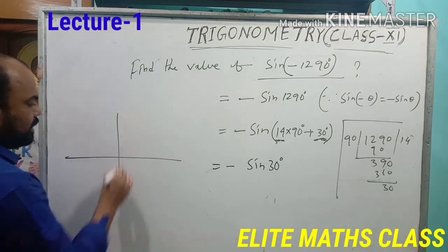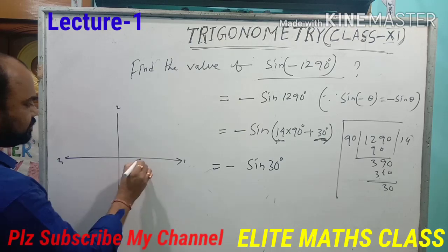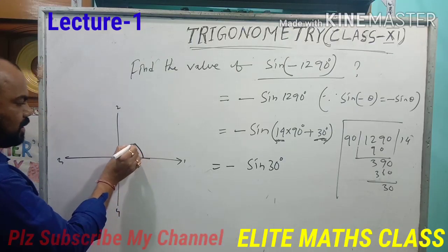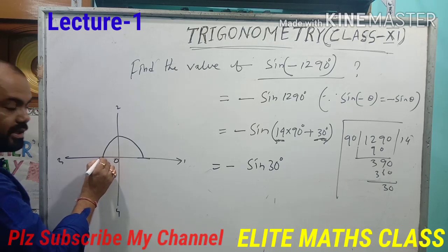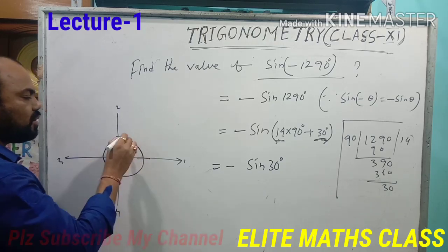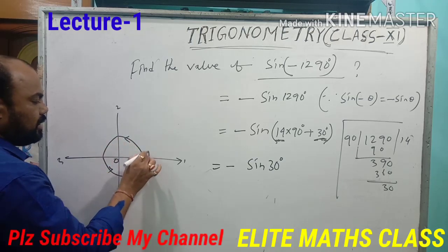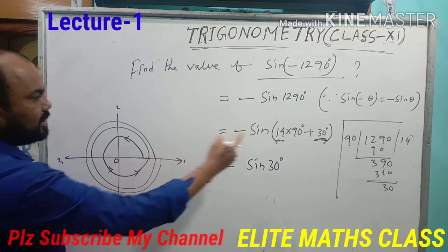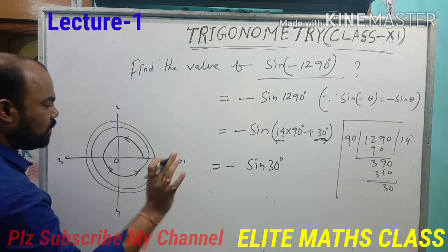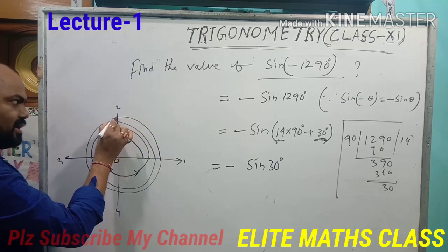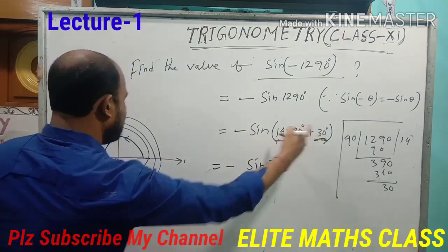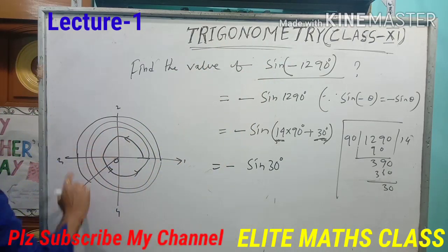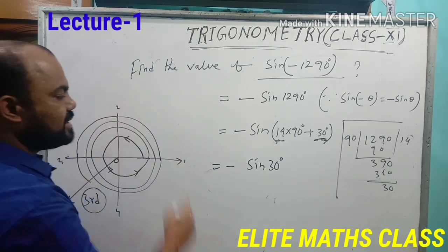Now how to find the sign? This is the fourth quadrant: 1, 2, 3, 4. This is the initial position. See here — 14 × 90 + 30. You start from the initial position. 1 × 90 is the first quadrant boundary; 2 × 90 is 180; 3 × 90 is 270; 4 × 90 completes one round. Another round: 8 × 90. Third round complete: 12 × 90. We have 14, so two more: 13 × 90, then 14 × 90. Then plus 30 degrees — so it is here, in the third quadrant. The whole angle 1290 degrees, by this process, lies in the third quadrant. And in the third quadrant, sine is negative.